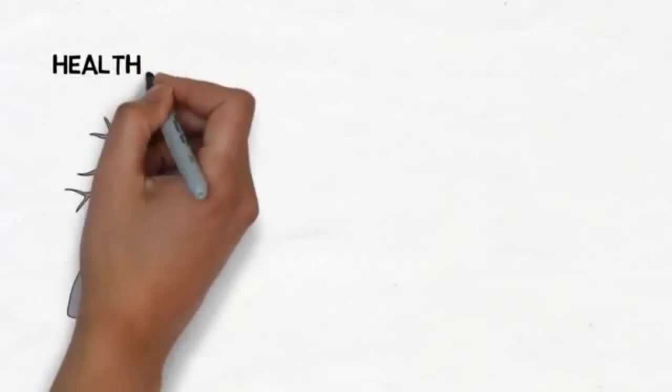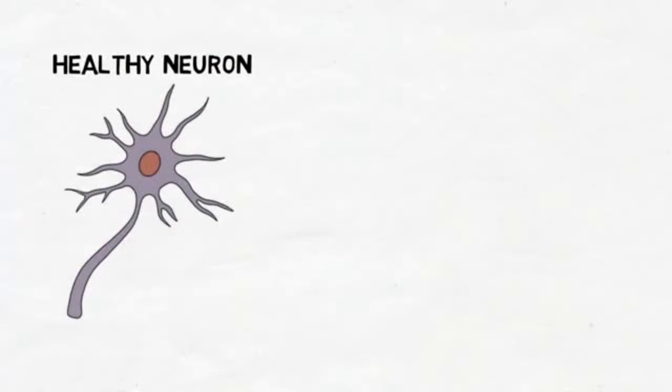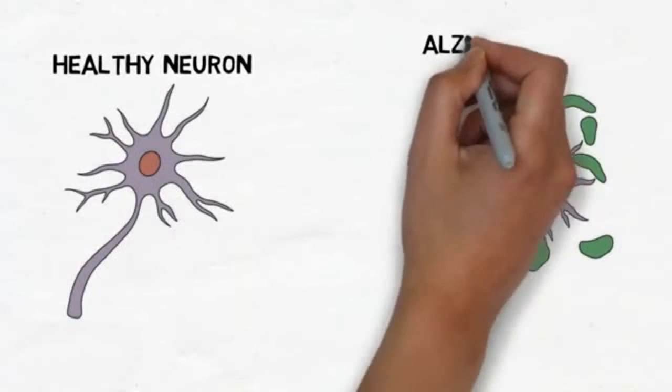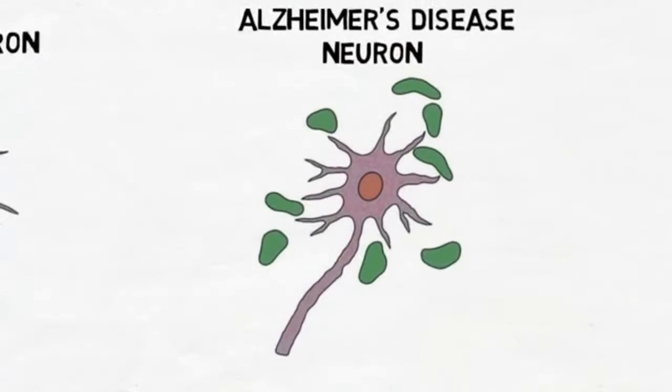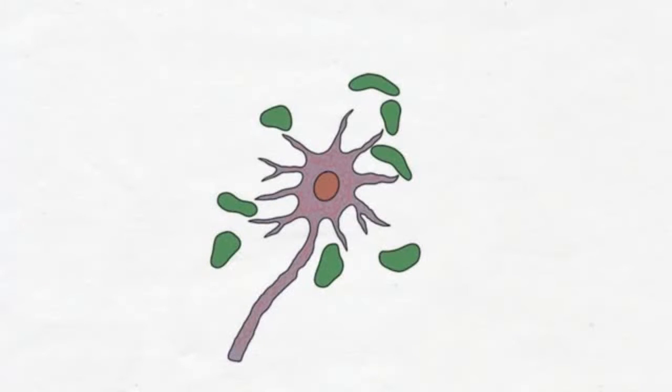A hallmark sign of Alzheimer's disease is the formation of clusters of misfolded proteins both inside and outside of neurons. One of these proteins, amyloid beta protein, is found in the extracellular space around neurons in a healthy brain.